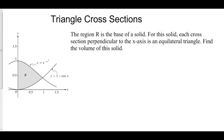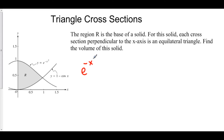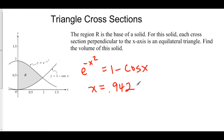Well first, we need to know where we're integrating to. We're integrating from 0 to some place that's a little bit less than 1. To figure it out, what we can do is set our two functions, e to the negative x squared and 1 minus cosine x, equal to each other. Using a calculator, we can find that x is equal to 0.942. So we know that we are integrating from 0 to 0.942.